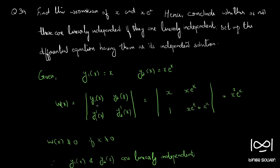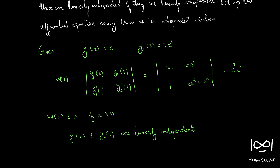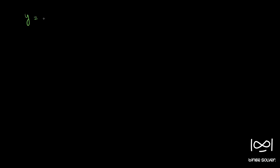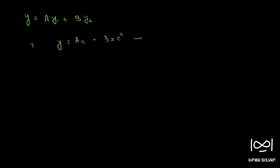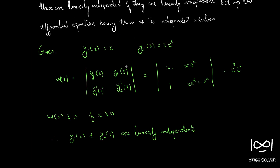Now we have to find a differential equation which has y1(x) and y2(x) as independent solutions. That is the tricky and lengthier part of the solution. Since y1(x) and y2(x) are independent solutions, we can write y = a·y1 + b·y2, that is y = ax + bxe^x. Let this be equation 1.